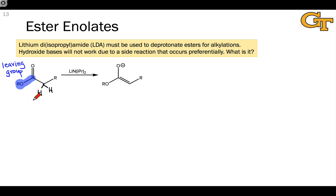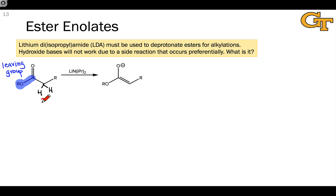This limits our choice of base, because if the base we use is also a good nucleophile, that nucleophile can add to the carbonyl carbon and engage in nucleophilic acyl substitution. We need to use something that is a strong enough Brønsted base to deprotonate at the alpha position of an ester — the pKa here is a little bit higher than that for an aldehyde or ketone, up around 25 — but also is not nucleophilic.